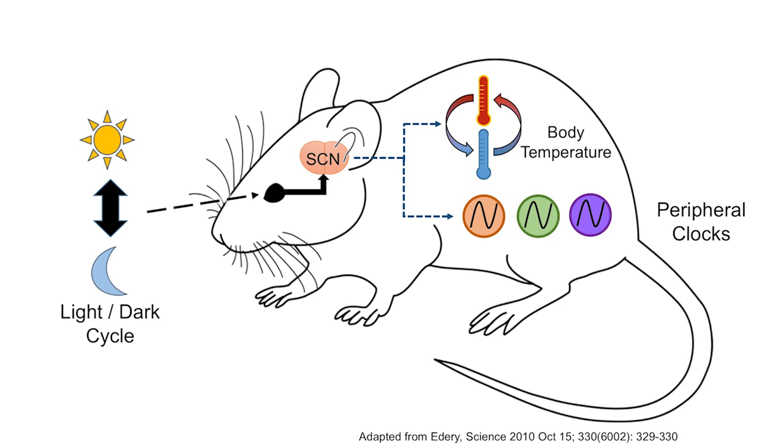In mammals, the SCN functions as a central pacemaker that adjusts the circadian rhythms of the whole body, synchronizing the peripheral clocks in other organs.